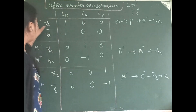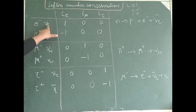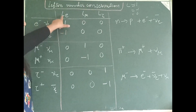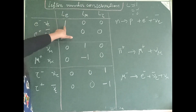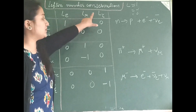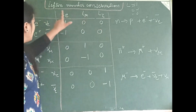For electrons and the electron neutrino, the electron lepton number is 1, the muon lepton number is 0, and the tauon lepton number is 0.